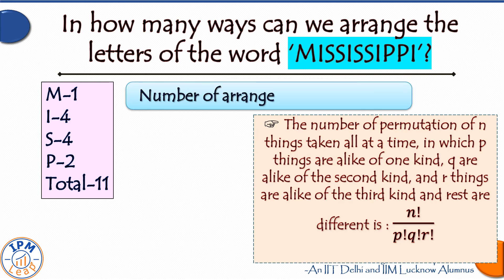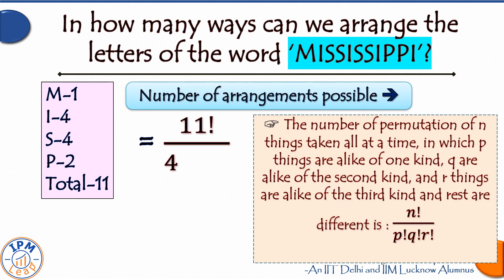So we have to arrange eleven letters, out of which four are I's (alike), four are S's (alike), and two are P's (alike). Using the formula, the number of possible arrangements of this word will be 11! / (4! × 4! × 2!).